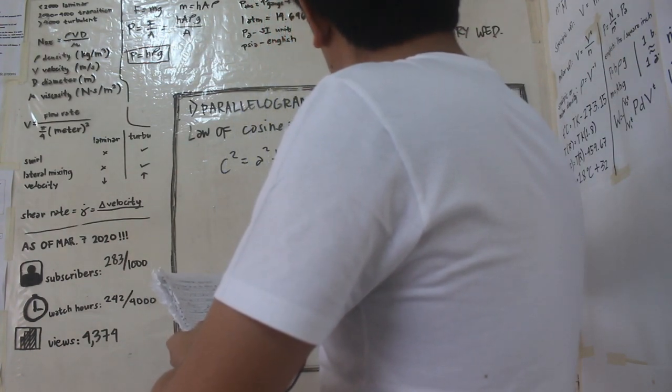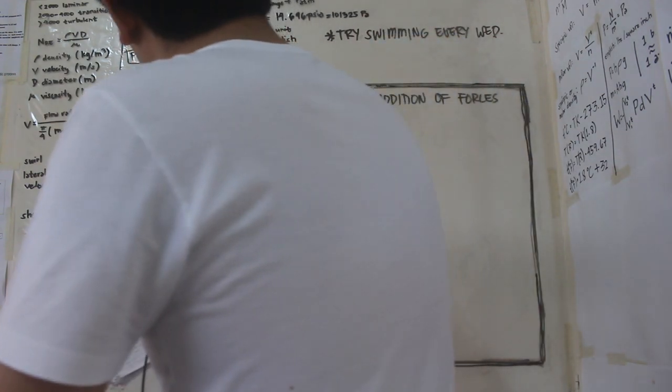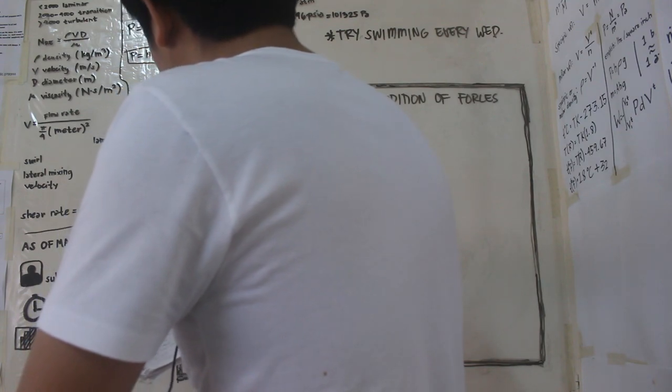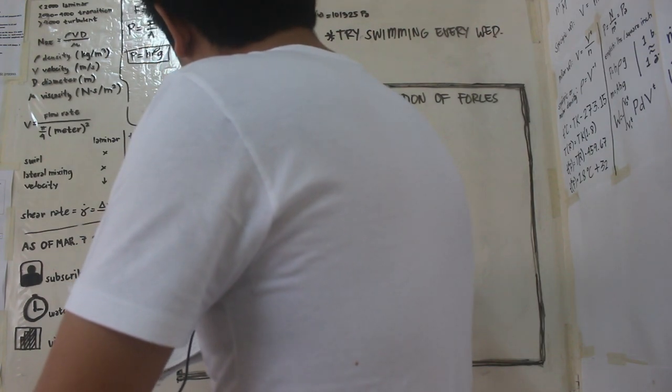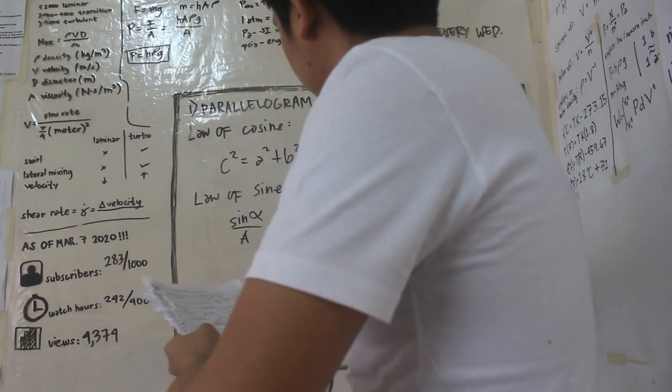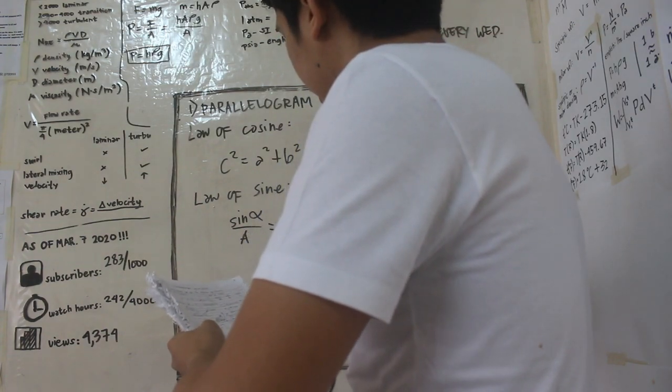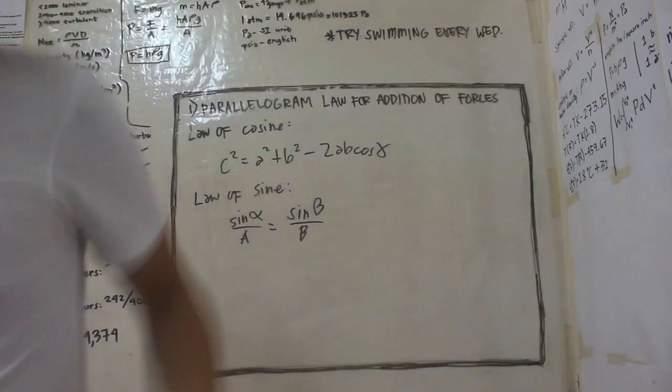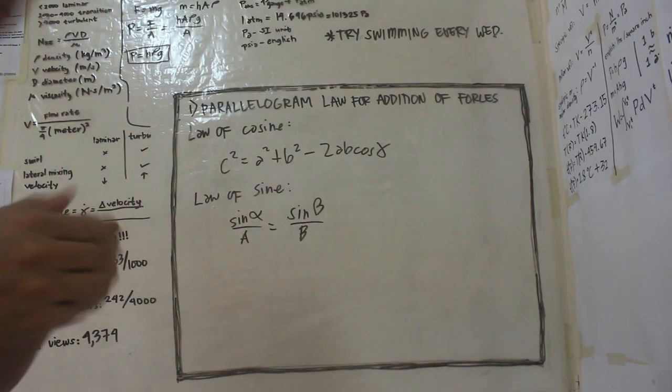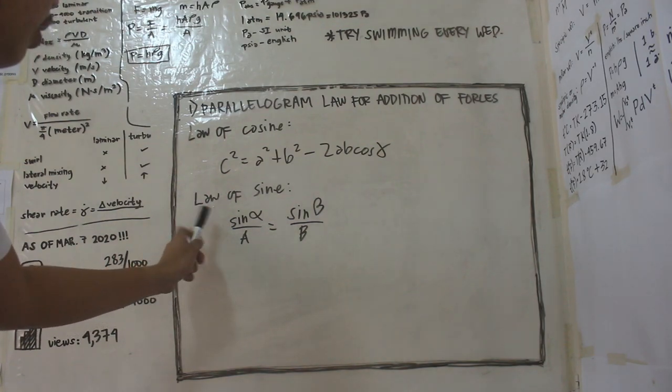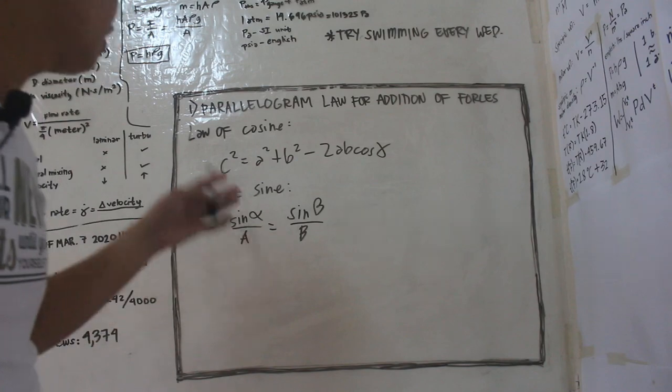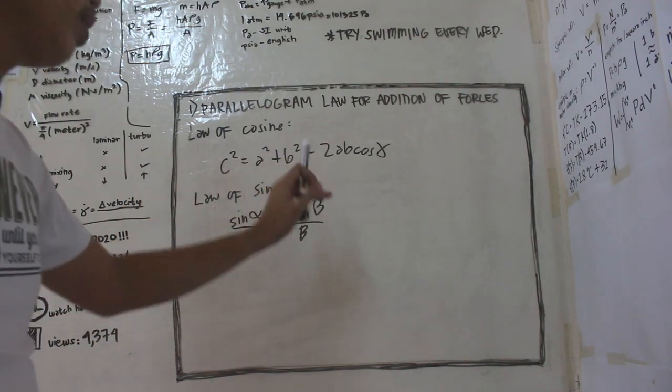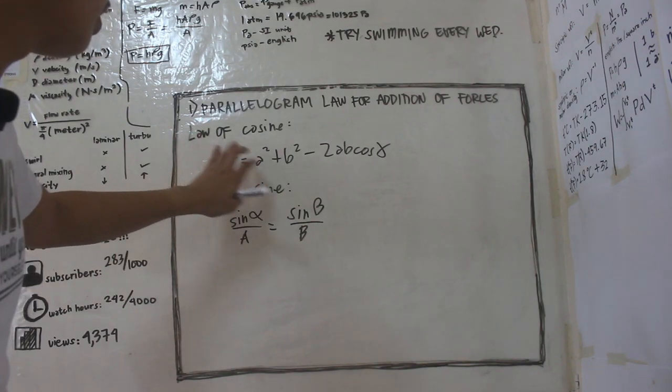And law of sines states sin alpha over a is equal to sin beta over b. So ito yun guys. And take note, alam na din natin na pwede itong magka-interchange, so pwede itong a nasa ibabaw tapos sin alpha yung nasa ilalim is equal to b over sin beta. And dito, c squared is equal to a squared plus b squared minus 2ab cosine gamma.